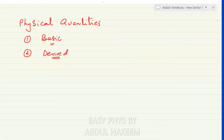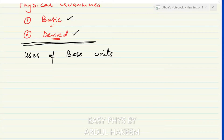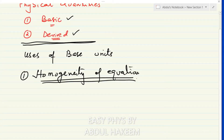Under the topic of physical quantities, we have covered basic physical quantities, derived quantities, and their units. Now we move to the uses of base units. There are four uses in our syllabus. The first use is to check the homogeneity of an equation. The question is: what is the homogeneity of an equation?